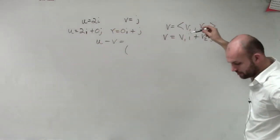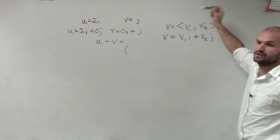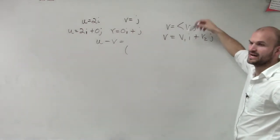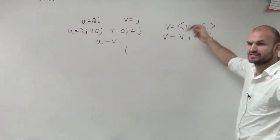when we did u minus v when it was in component form, what we simply did was we did u1 minus v1, and then we did u2 minus v2.